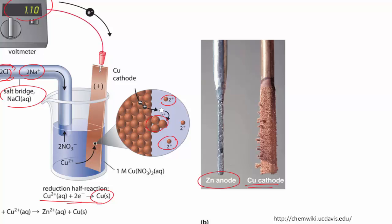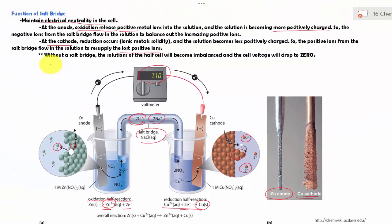What if we don't have a salt bridge? Without a salt bridge, or without a functional salt bridge, the solution of the half cell will become imbalanced — the charge will not be balanced in the solution, and we will either have more positive or more negative. As a result, the cell voltage, or the E cell potential, will become zero.